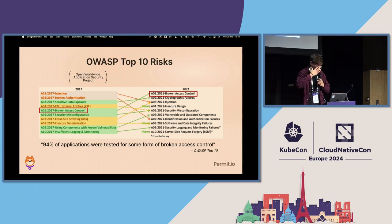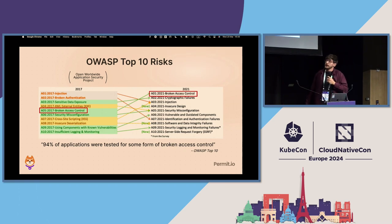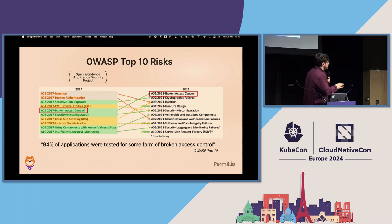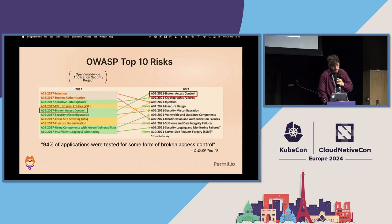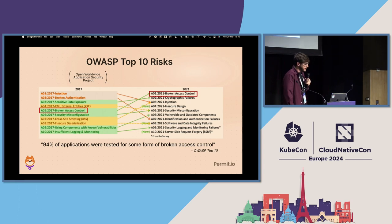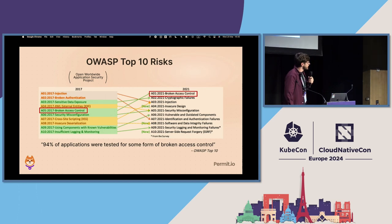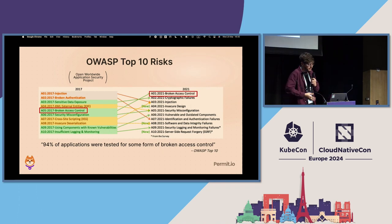OWASP — the Open Worldwide Application Security Project — releases every few years a top 10 list of application security risks. In 2017, they claimed that broken access control was in the fifth place, and authentication was in the second place. But in 2021, broken access control became not only the first place — it really went from fifth to first. So it's not only a risk, it's very, very impactful and important to take care of.